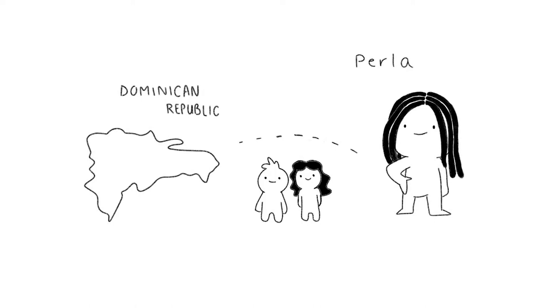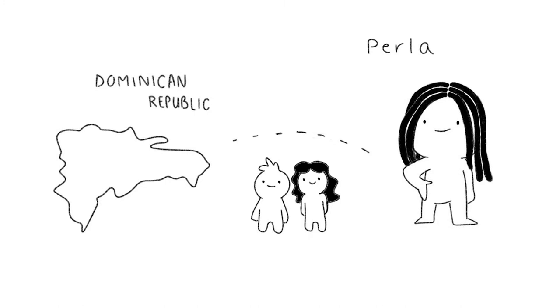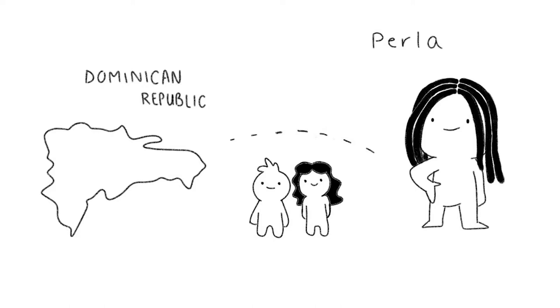Conformity. Perla's entire family immigrated from the Dominican Republic just before she was born and she's the first to attend college. On move-in day, her monoracial white-identifying roommate struggled pronouncing her name. Perla started going by Pearl to fit in with her white roommate, white teachers, and white friends.